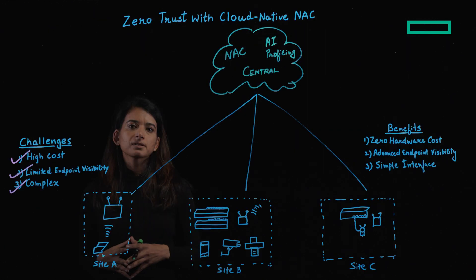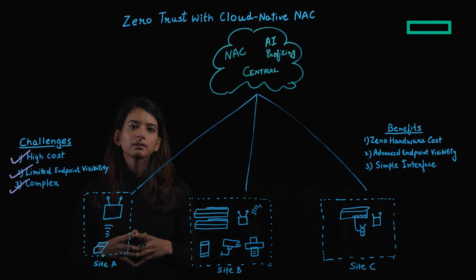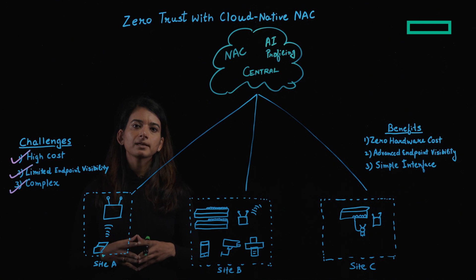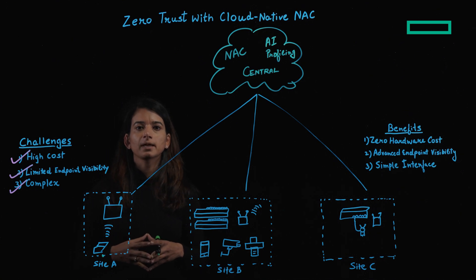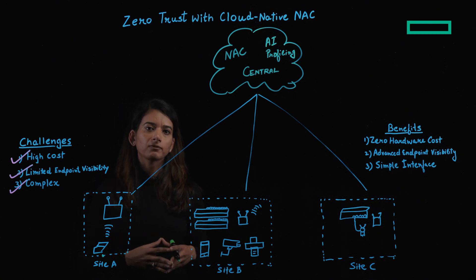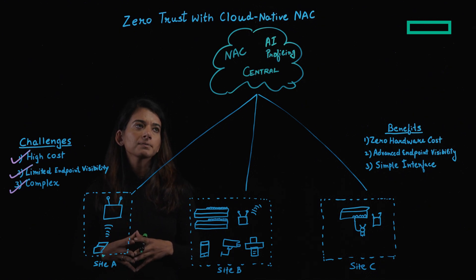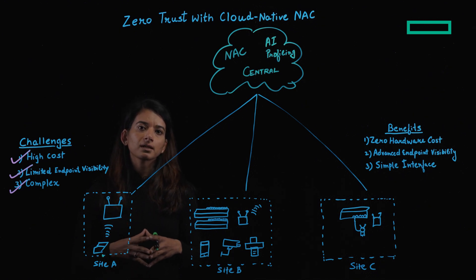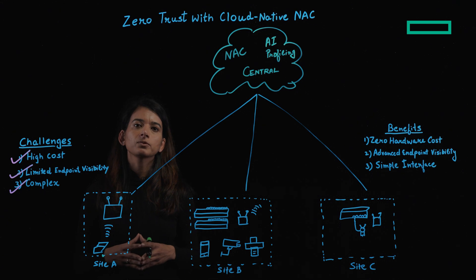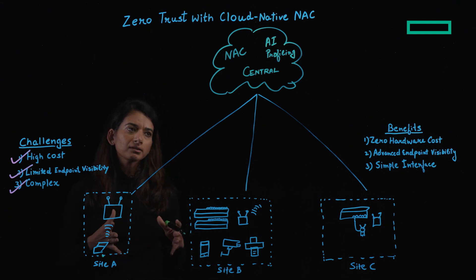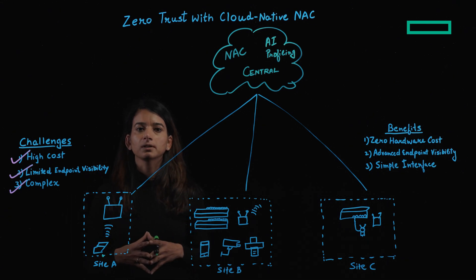To solve these challenges, we have introduced a central network access control solution built right into the HP Aruba Networking Central platform. No extra hardware, no added licenses. It helps provide the zero-trust secure journey for end users and organizations. There are three parts to this solution.